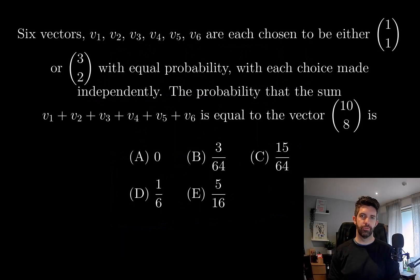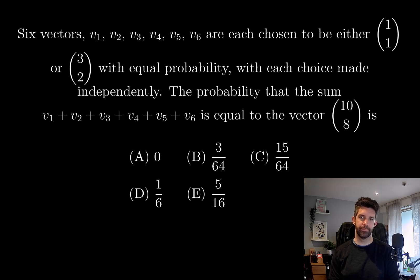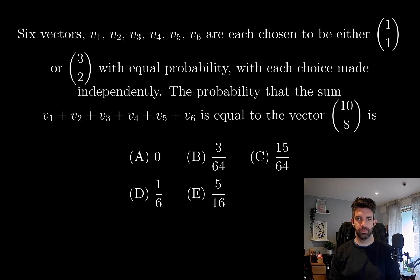Six vectors v1, v2, v3, v4, v5, and v6 are each chosen to be either (1,1) or (3,2), with equal probability, with each choice made independently. The probability that the sum of v1 up to v6 is equal to the vector (10, 8) is one of these options.